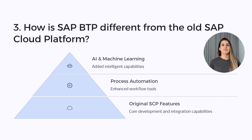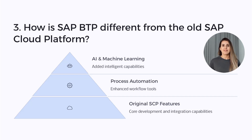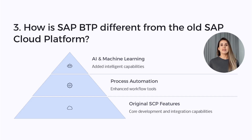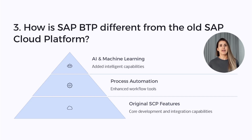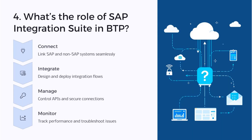Question three: How is SAP BTP different from the old SAP Cloud Platform? The main difference is scope. SAP BTP is broader — it includes AI, machine learning, and process automation on top of what SCP offered. It's more unified and brings everything under one roof for developers and businesses alike.